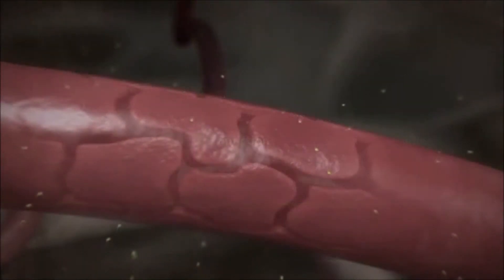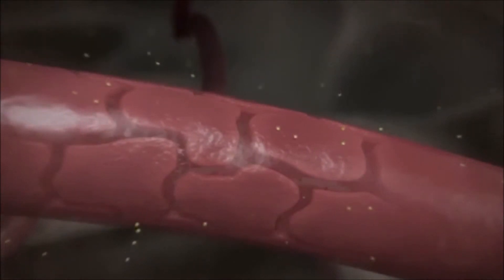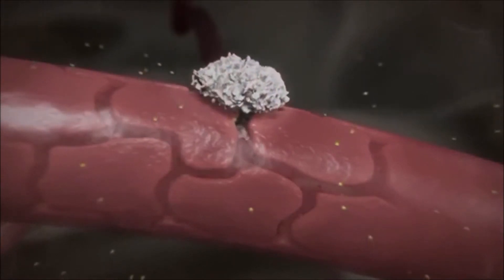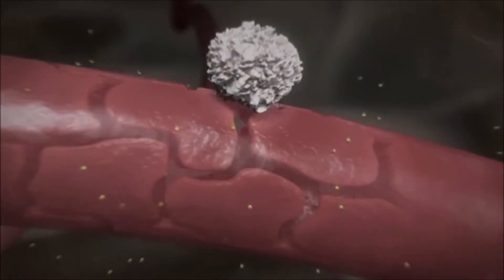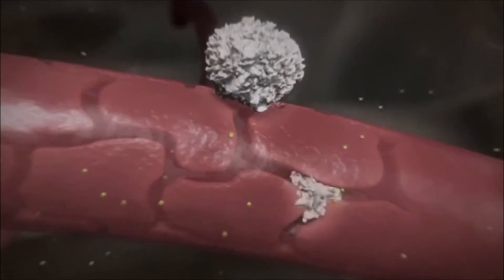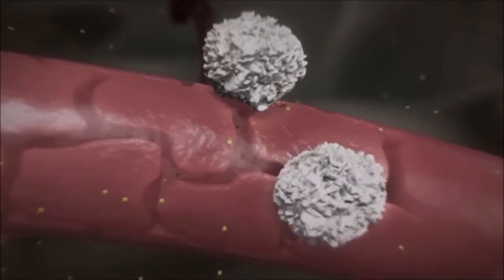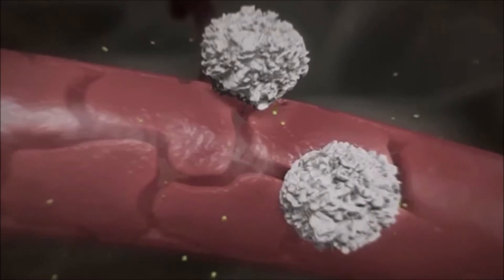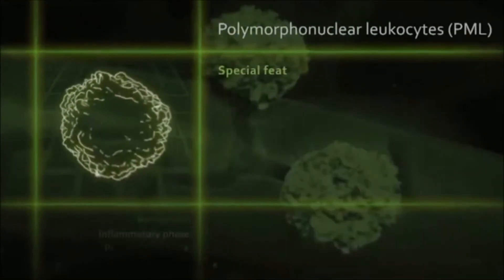On the inside of the vascular walls, endothelial cells promote the attachment of polymorphonuclear leukocytes from the bloodstream. These leukocytes, also known as PMLs, squeeze themselves through the gaps between the endothelial cells. Once they have digested the basal lamina using proteases, they are free to enter the wound.